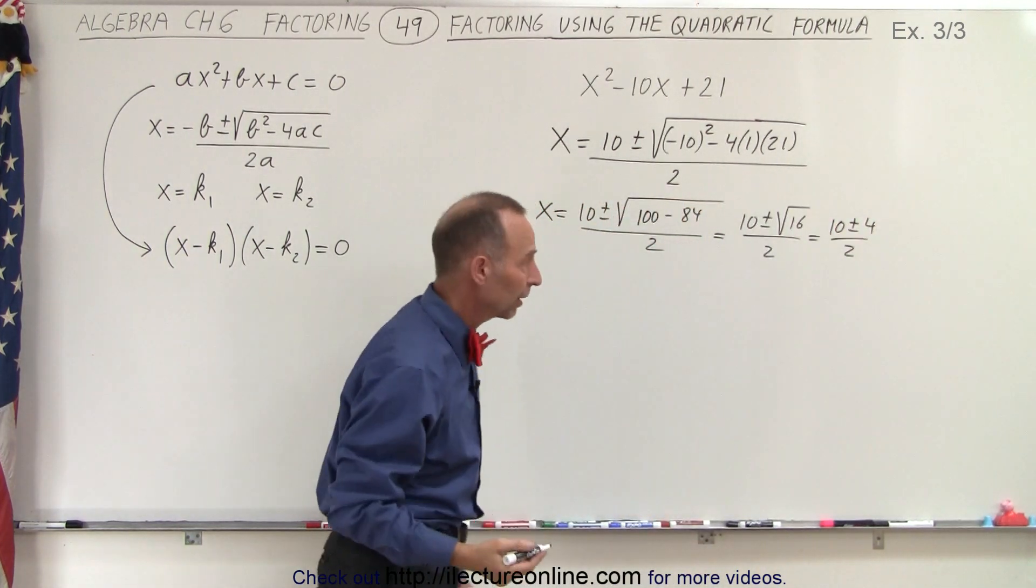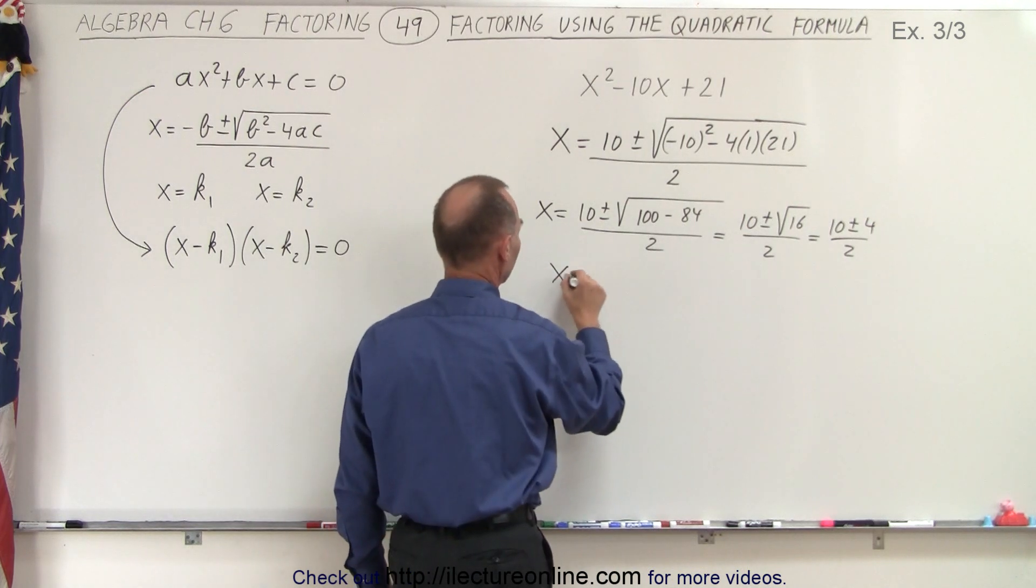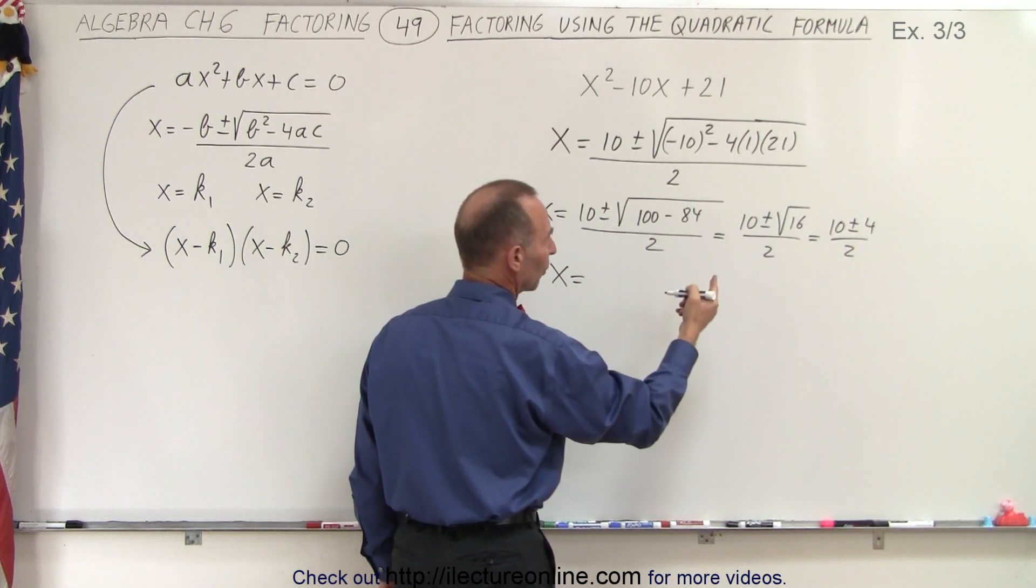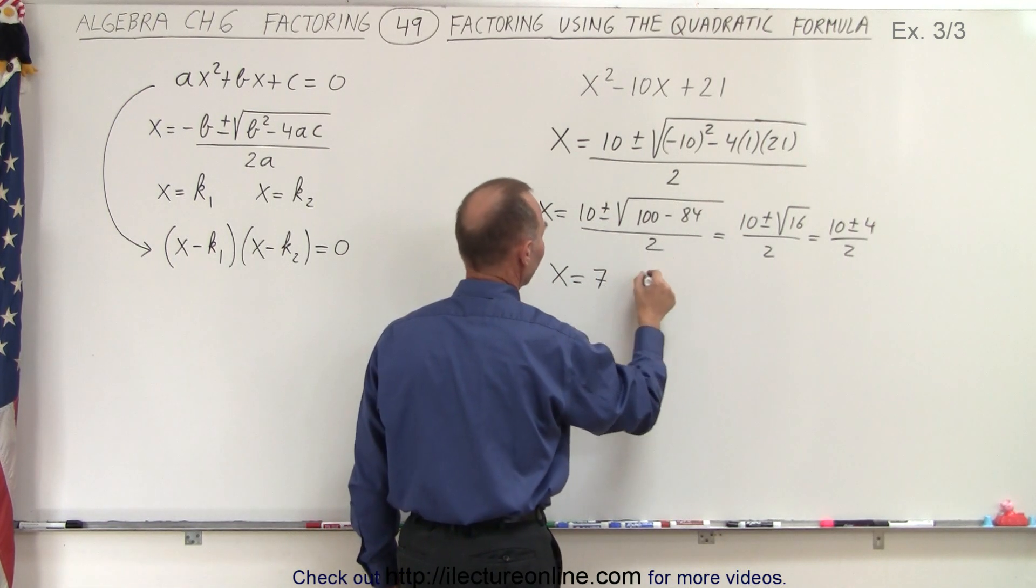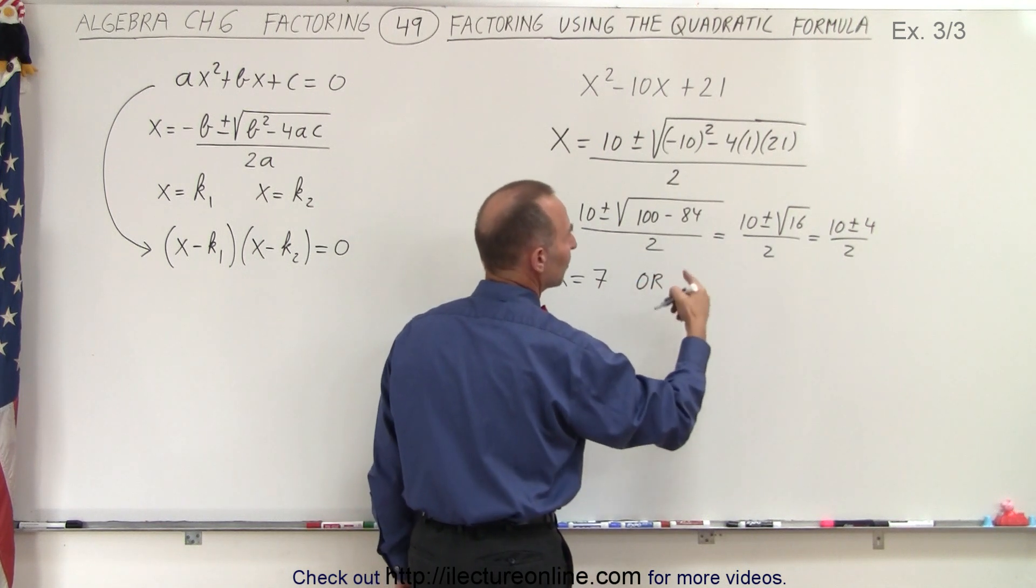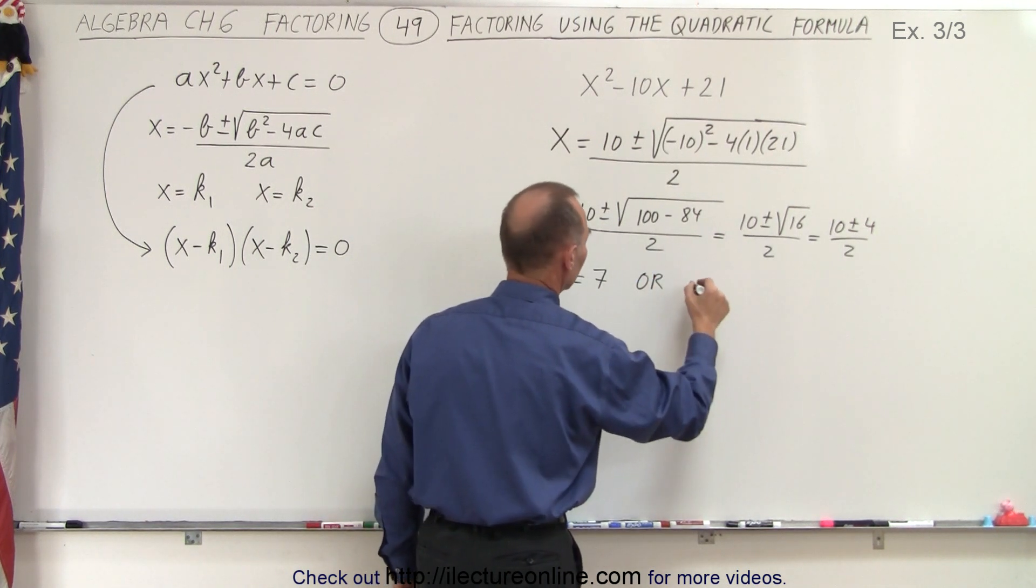And that leaves us two possibilities. We have x is equal to 10 plus 4, which is 14 divided by 2, which is 7. Or 10 minus 4, which is 6 divided by 2, which is 3.